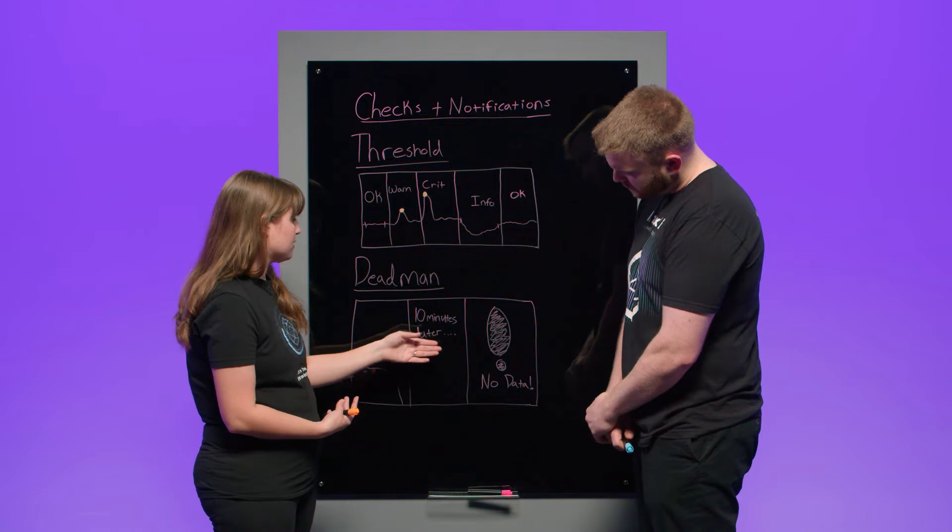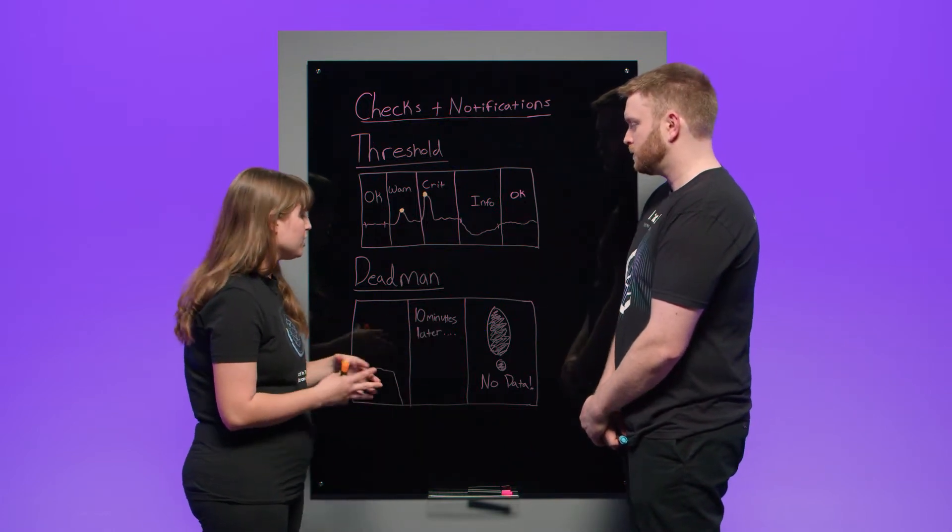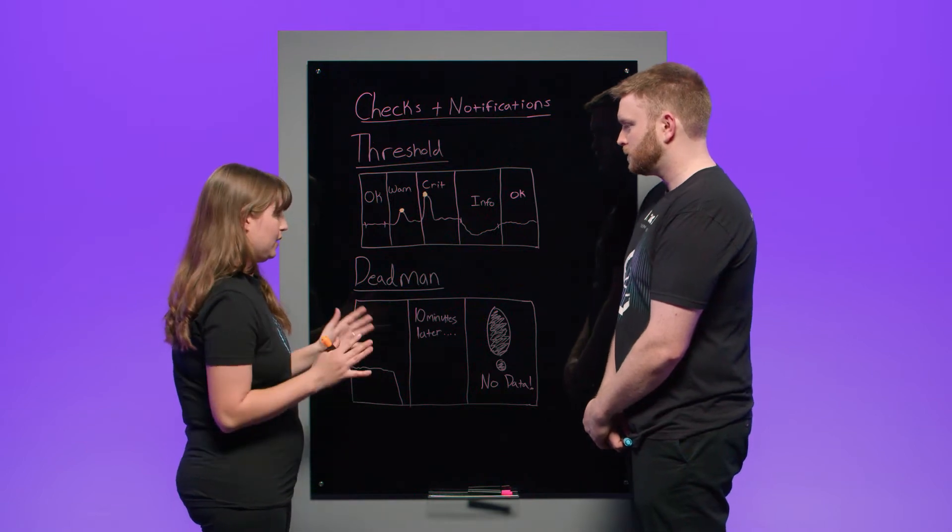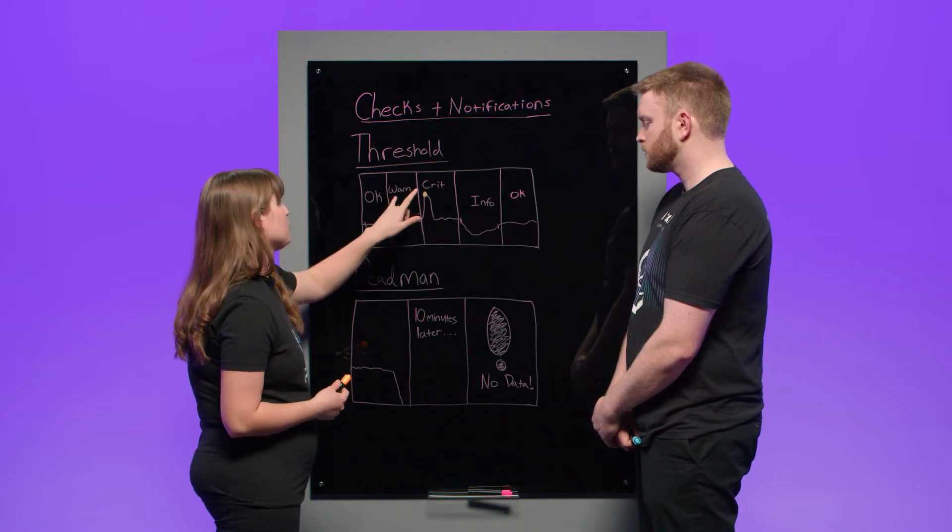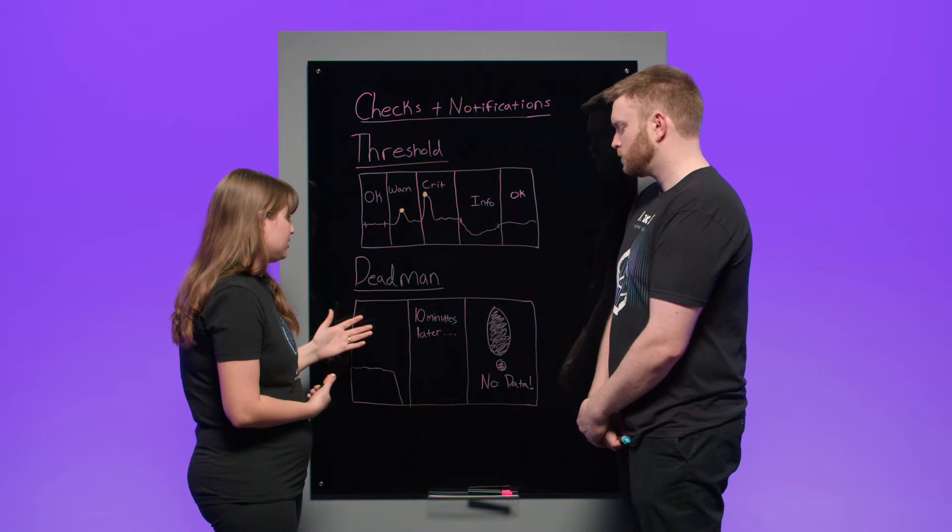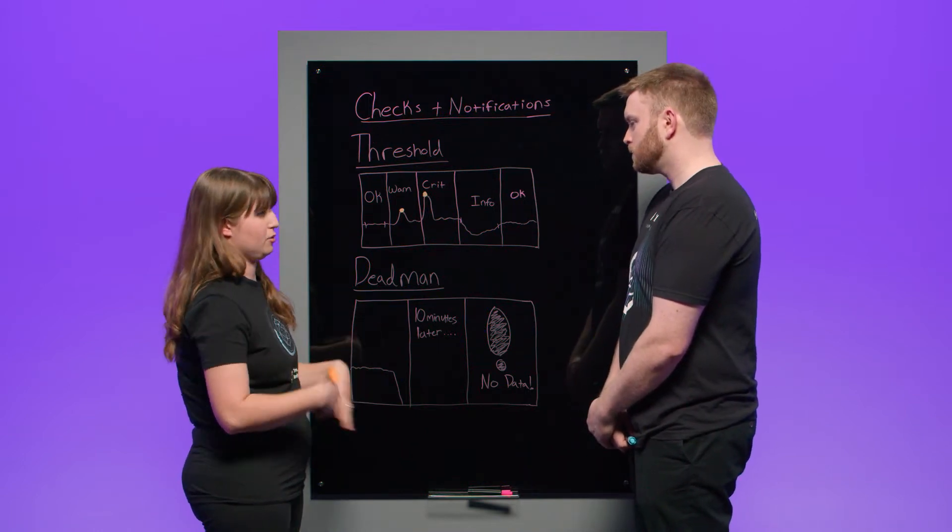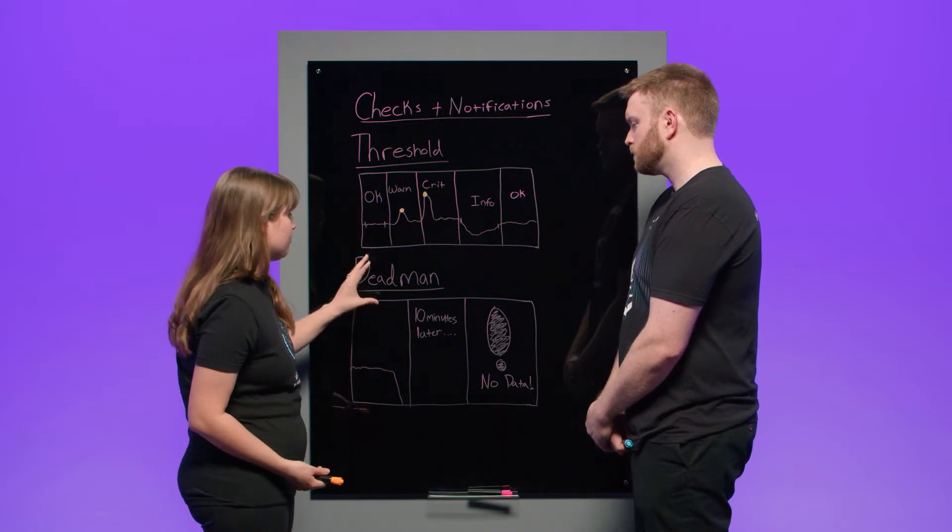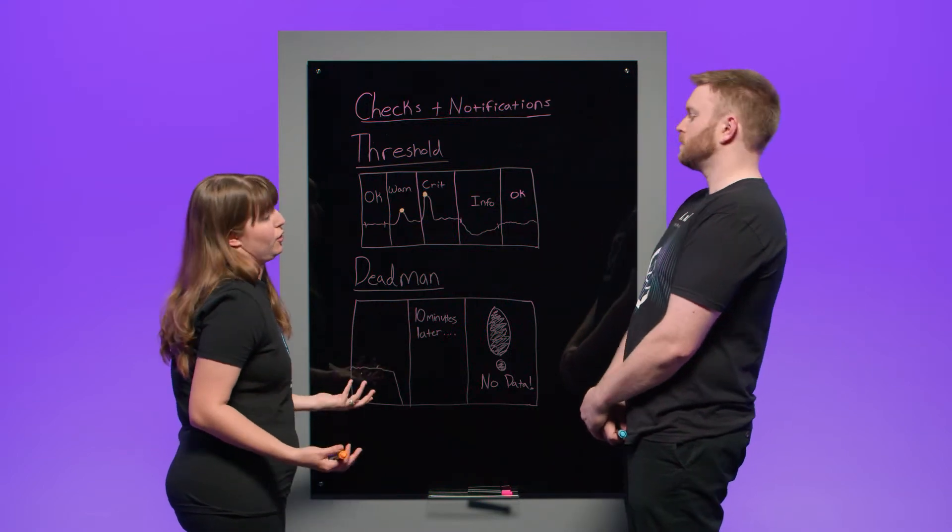So what the dead man check will then do is if how often it's set to run, if this one is set for 10 minutes later, it will be alerted that there's no data coming in, and it's very upset about this. And it can set the status to any of these four, though I would say that most people are putting it to warn or critical, because normally if there's no data coming in, it's not really okay, and it's not really info per se as much as it's just not great. So that is what the dead man check is used for, and it is a one-time deal kind of thing. You don't set a dead man check to run continuously per se like this one does. It runs, it sets the status to critical, and then it's done running, because there's no data to look for anymore.